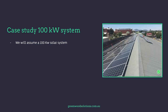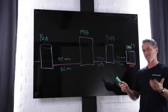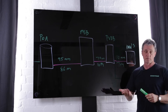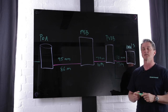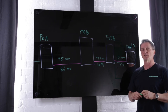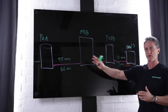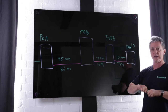We'll assume a 100 kilowatt solar system — that's 100 kilowatts of inverter capacity on the AC side — and in this case we're going to use four 25 kilowatt inverters just to make things easy. Remember: 400 volt nominal for three phase commercial solar, two percent means eight volts to play with over the entire length.